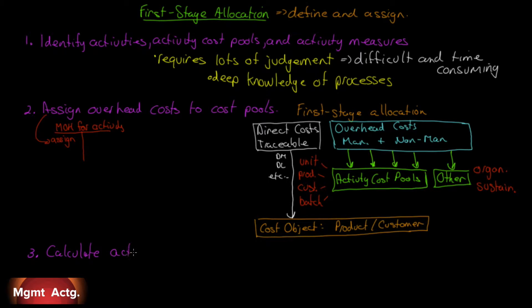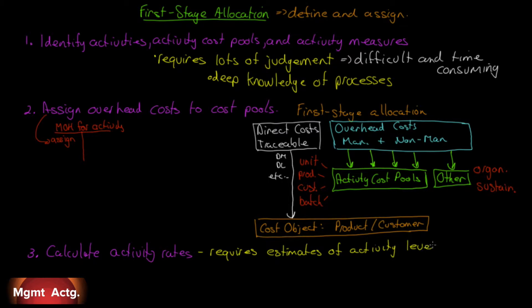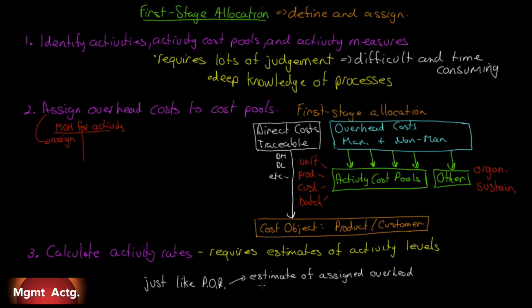Here's a sneak preview of what we're going after. Once we've assigned our costs to the activity cost pool, we calculate our activity rates. This requires an estimate of the activity level of each activity. Look at that little T-account — manufacturing overhead for the activity. We assign some costs on one side. To allocate those costs to each of the units, we need an estimate of the activity level associated with that cost pool. Just like a predetermined overhead rate, we need an estimate of the assigned overhead and an estimate of the activity level.